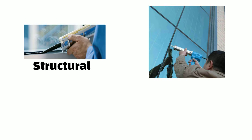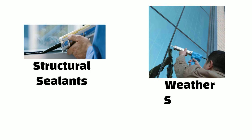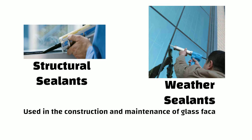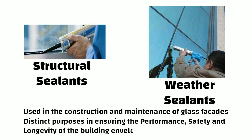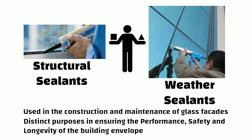Hello friends. Structural sealants and weather sealants are two different types of sealants used in the construction and maintenance of glass facades. Both serve distinct purposes in ensuring the performance, safety and longevity of the building facade. In this video, we will discuss the key differences between structural sealant and weather sealant. So let us start.